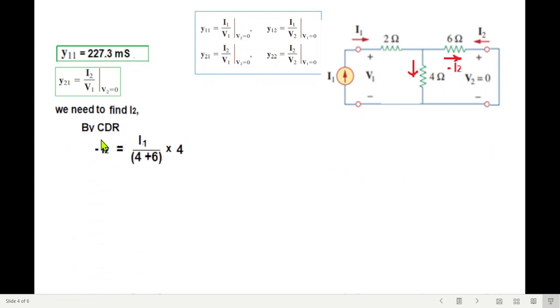To find i2, we will be using the CDR, or the current division rule. This current is the total current divided by total resistance, that is 4 plus 6, multiplied by the opposite arm.